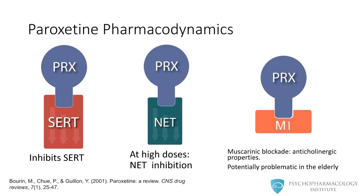Paroxetine inhibits the reuptake of serotonin by blocking the SERT transporter. The drug can also inhibit the norepinephrine transporter, but this happens at high doses. So far, no clear clinical implications for this noradrenergic feature have been described.